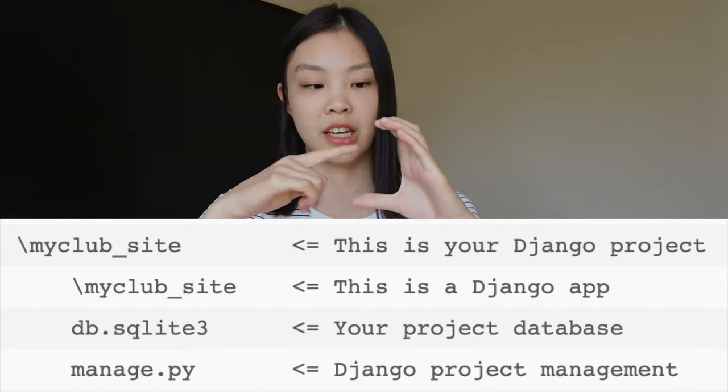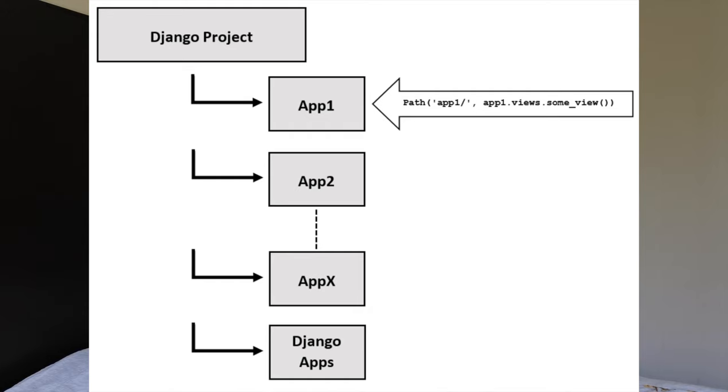A Django project refers to the entire application and all of its parts. An application refers to a sub-module inside of the project — the project contains applications, and there can be several. If you're building a very complicated website with a lot of databases and back-end things going on, you'll probably need several Django applications. For my website it's simple — the only database is for my projects and works — so I only needed one application, but you'll always need at least one.